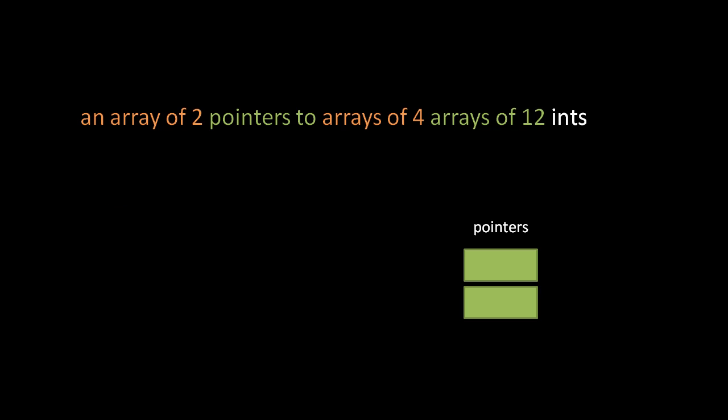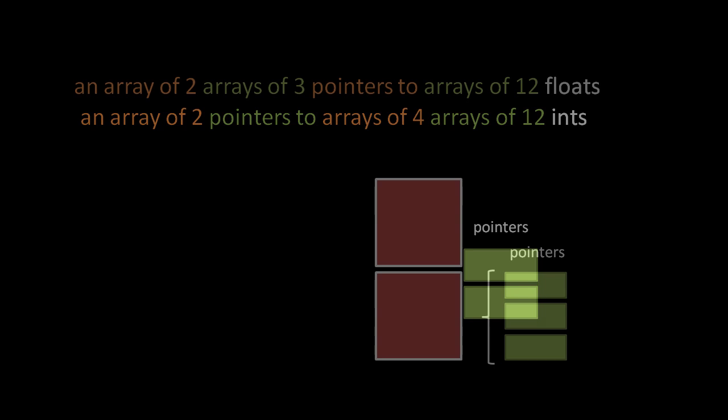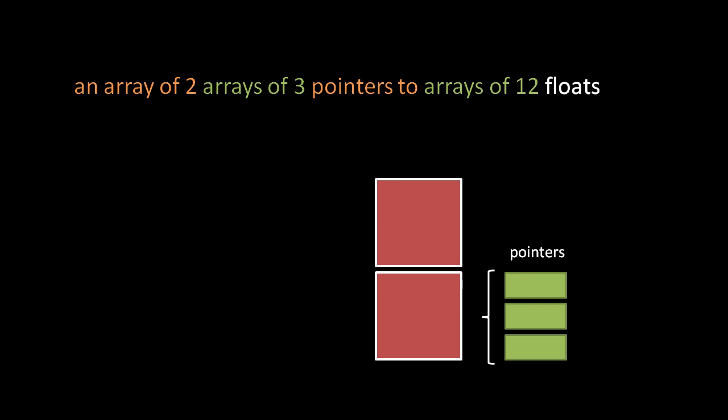Here's an array of two pointers to arrays of four arrays of 12 ints. What we have in memory is simply two pointers. The pointers point to arrays of arrays, but the pointers themselves, as always, are merely addresses. Here we have an array of two arrays of three pointers to arrays of 12 ints. Again, reading left to right, as soon as we're talking about a pointer, we're talking about just a single address, regardless of the type to which the pointer points.